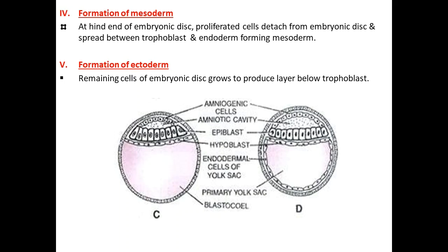Now look carefully at the labellings in diagram D. The epiblast and hypoblast cells: the hypoblast cells that are with the trophoblast will form the extra-embryonic fetal membrane called yolk sac - meaning the endoderm cells of the yolk sac. The yolk sac is the extra-embryonic fetal membrane. The cavity formed will later be called the primary yolk sac. In human development, this yolk sac is not filled with yolk.